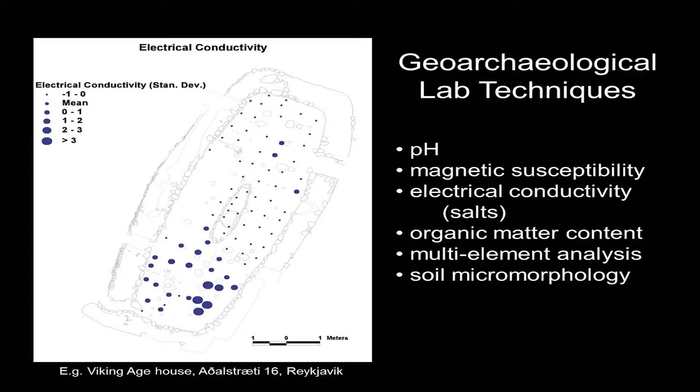From these tins, we've manufactured thin sections — little glass slides that have intact pieces of stratigraphy that we can analyze on a petrographic microscope. If you're sampling on a grid on a site, you can then lay out your data using a mapping program such as a GIS. This is the sort of information that we can get — what I'm displaying here is electrical conductivity, which is a very simple test that gives you an indication of the soluble salt content.